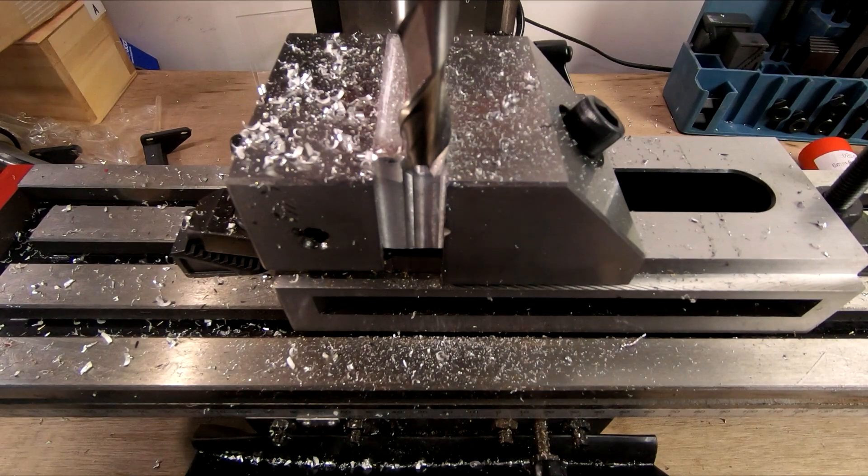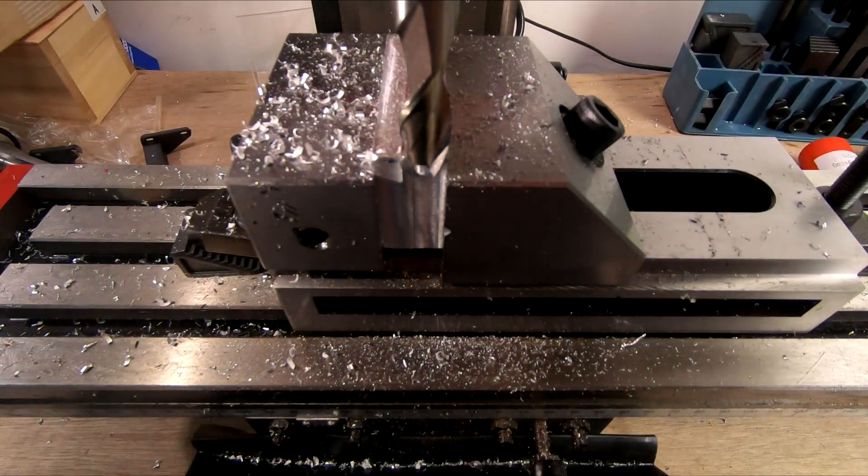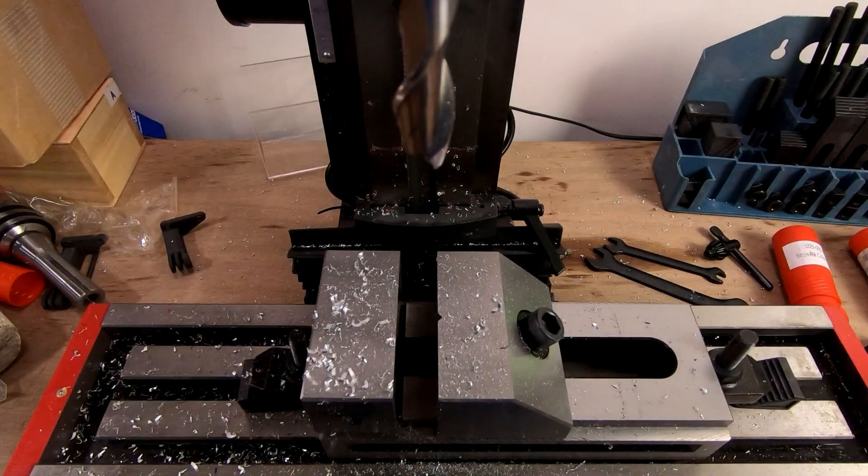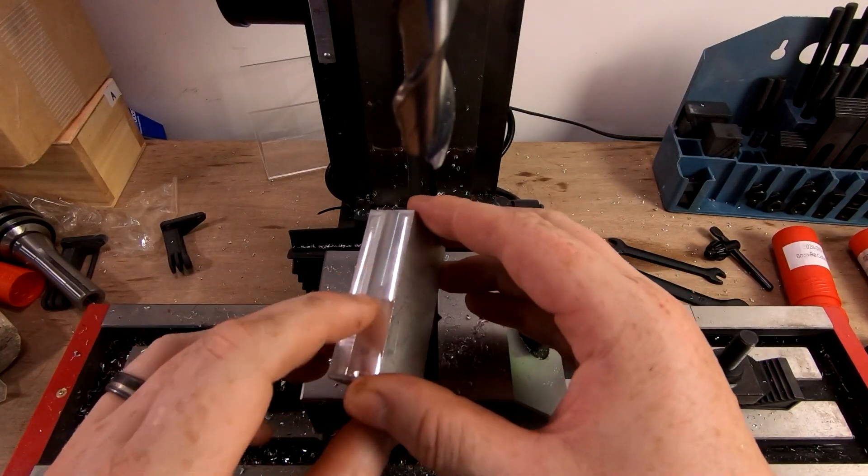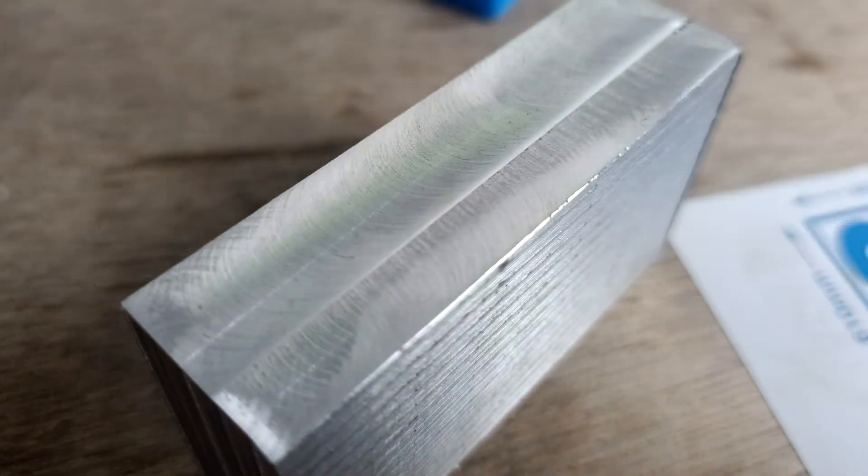All right, so we've got that done. It looks like it's coming out nice, so let's loosen this up and get it out of the vise. All right, so we've got that all cut. Might be a little bit hard to see on the camera because of all the shine, but that's cut really nice. Very smooth.